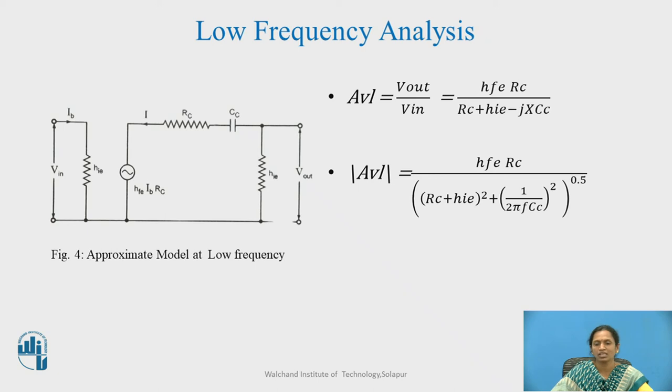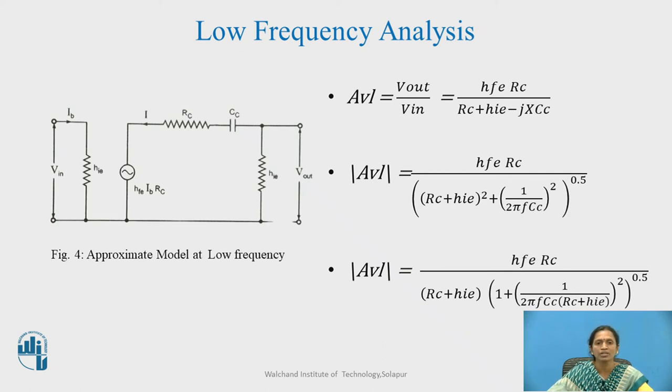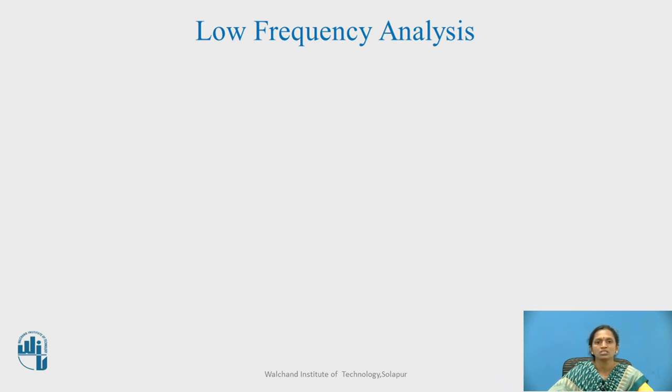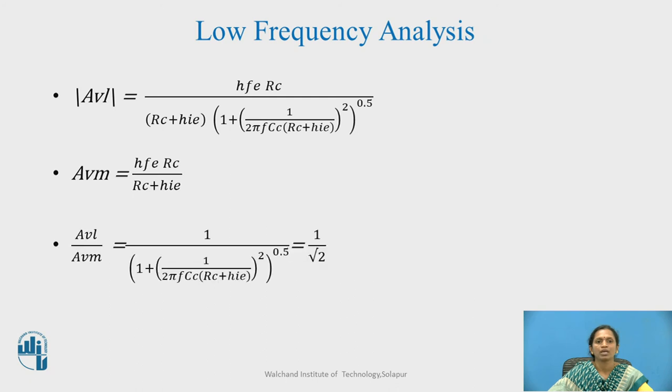With this I will also calculate my modulus of this gain which gives you this equation and through this I will now calculate the cutoff frequency, lower cutoff frequency means from which particular point I will get the constant output voltage. Here this is the ratio of AVM and AVL that is AVL by AVM. As you know that it is 1 by root 2 always. Therefore, if I analyze it further I will come across this particular equation that is 1 by 2 pi CC into RC plus HI.